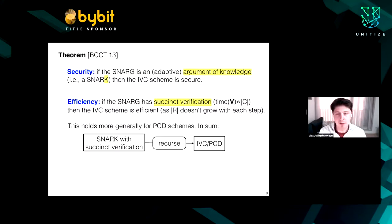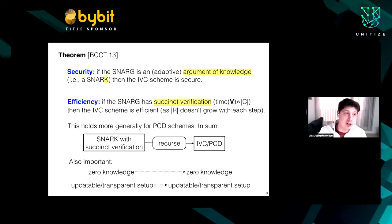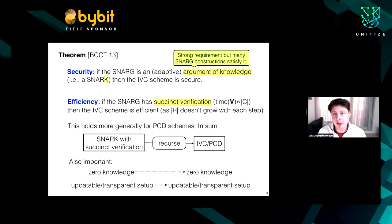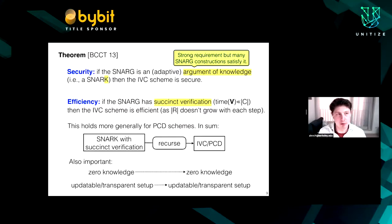This holds more generally for PCD schemes. In sum, it has been proven that if you have a SNARK with succinct verification, then through recursion you obtain IVC and PCD. This construction also has useful additional features: it preserves zero knowledge, and it maintains the type of setup — so if your SNARK has updatable or transparent setup, that type will be unchanged after recursion.